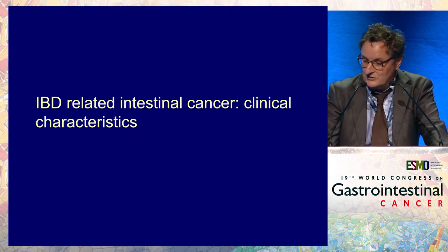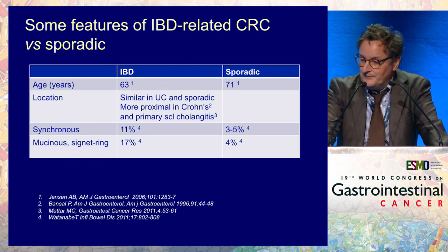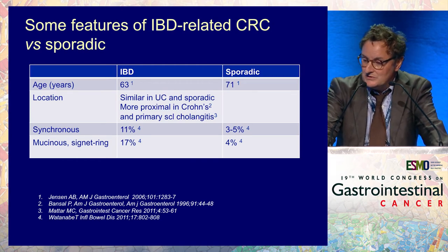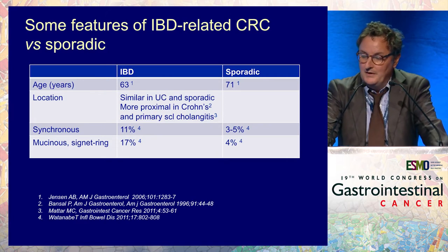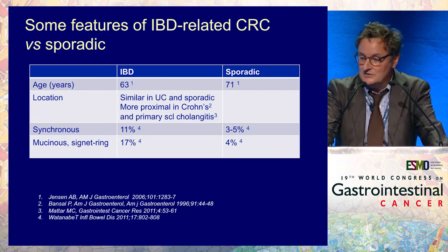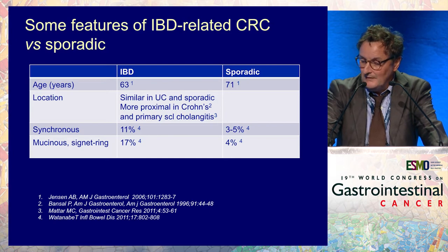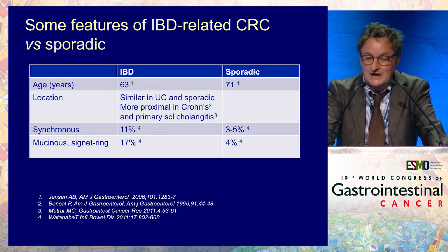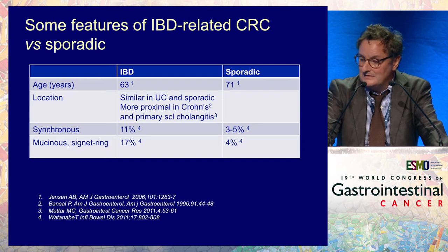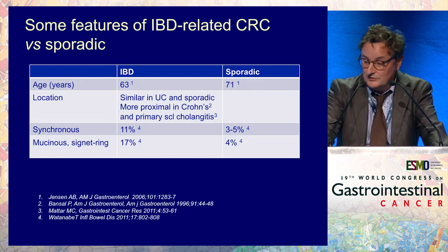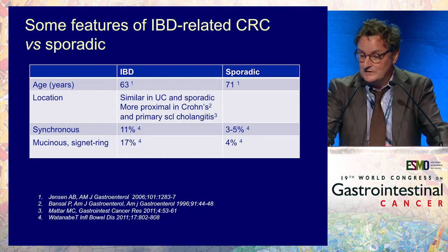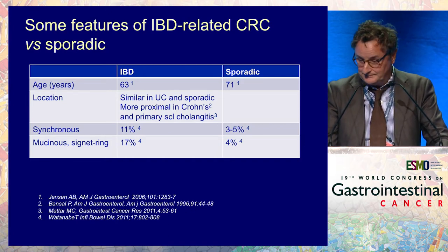There are features that differentiate IBD-related colorectal cancer versus sporadic cancer. First, IBD-related colorectal cancer occurs in younger patients. Their location is similar in UC and sporadic cancer, but it is more proximal in Crohn's disease. In patients who have associated primary sclerosing cholangitis, it is more often synchronous and more often mucinous or signet ring cells in IBD than in sporadic.